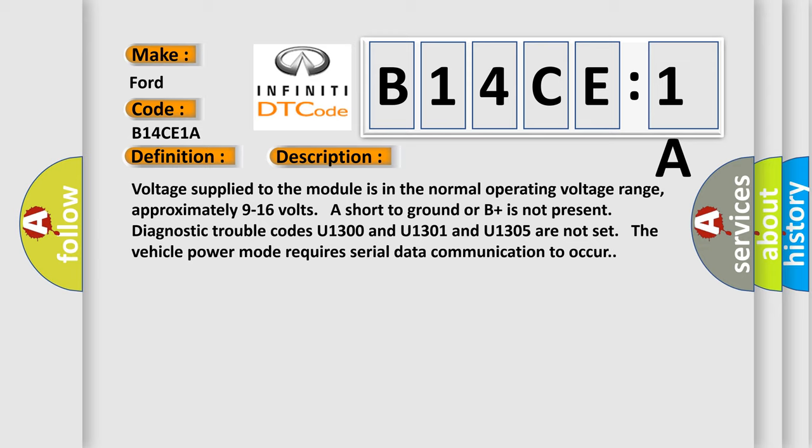Voltage supply to the module is in the normal operating voltage range. Approximately 9 to 16 volts. Short to ground or B plus is not present. Diagnostic trouble codes U1300, U1301, and U1305 are not set. The vehicle power mode requires serial data communication to occur.